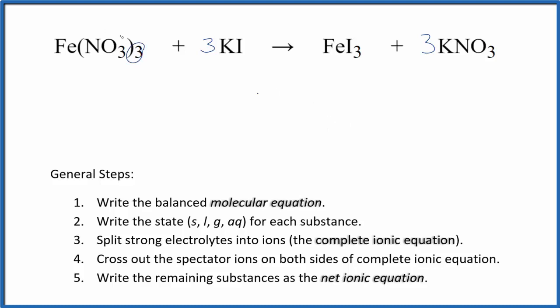Note that we have three nitrates here, and now we have three nitrate ions over here. So everything is balanced in our molecular equation. Now we can write the states for each substance, and that's going to look like this.